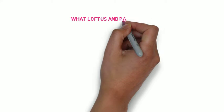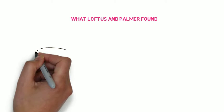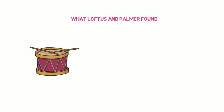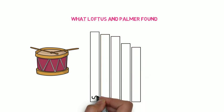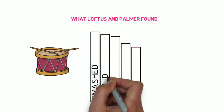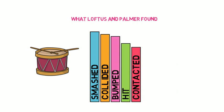So moving on to what Loftus and Palmer found in the initial experiment. That's experiment one. So drum roll, please, for the results. Here we go. So remember, five different verbs used: smashed, hit, collided, contacted, bumped.